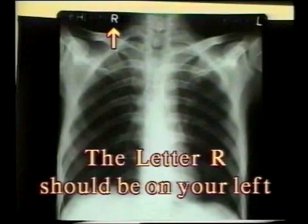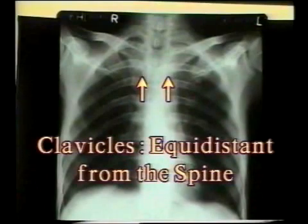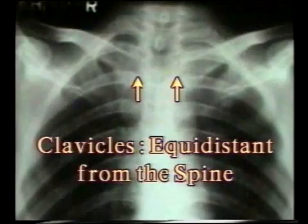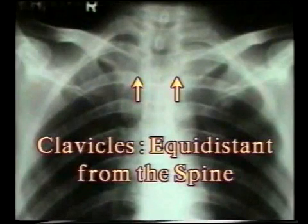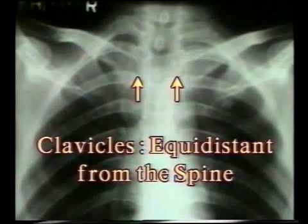Then confirm that it is well-centralized and well-exposed. In a well-centralized film, the medial ends of both clavicles are equidistant from the spine. If they are not, then you cannot make any comment on the mediastinal shift, cardiomegaly, or on comparative radiolucency of the lung fields.